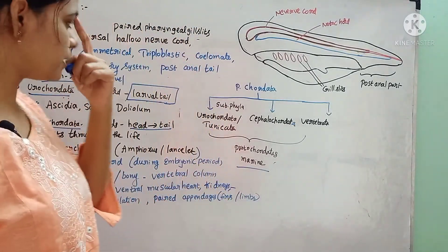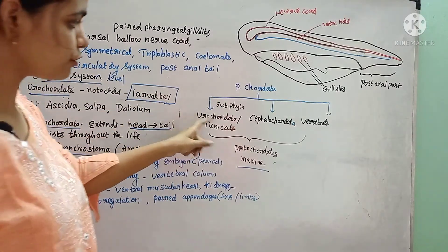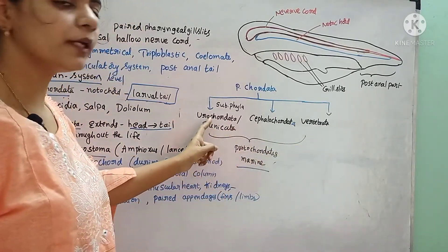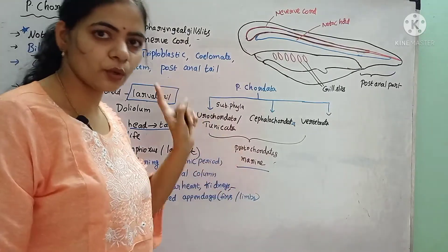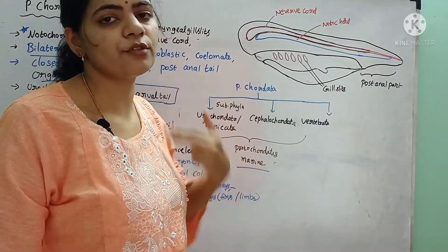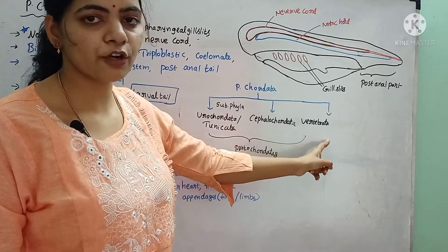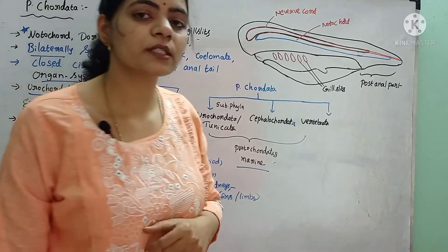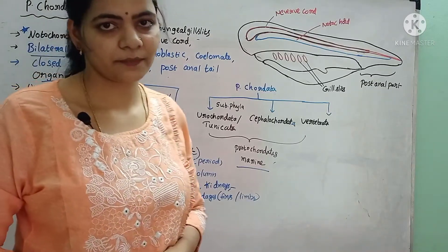Based on the presence of notochord, chordates are divided into three subphyla: Urochordata, Cephalochordata, and Vertebrata. In Urochordata, the notochord is present only in the larval stage, in the tail region. In Cephalochordata, the notochord is present from head to tail throughout life. In vertebrates, the notochord is present in the larval stage, but in adult form it is modified into a vertebral column of cartilage or bone.